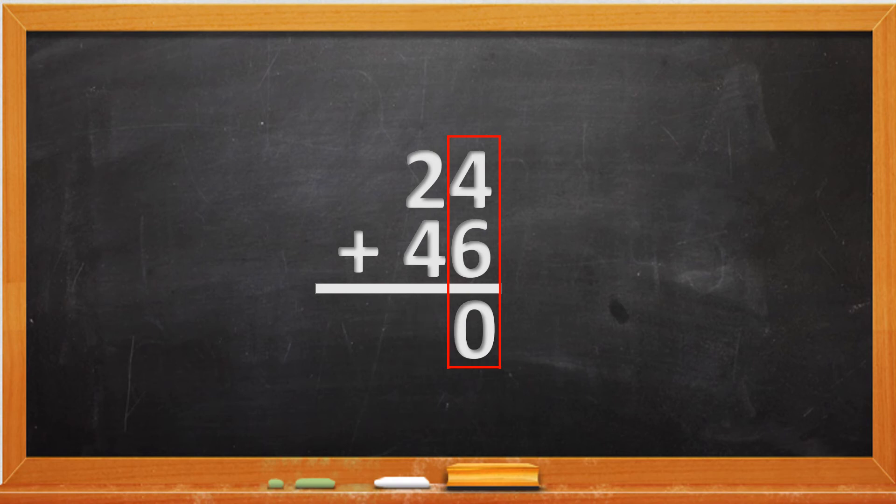We only put the second digit, the zero, and the one we bring on top and place it over the two.